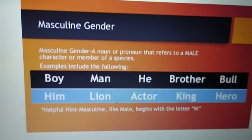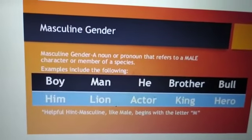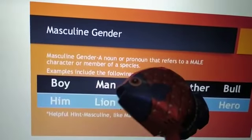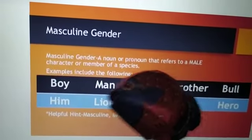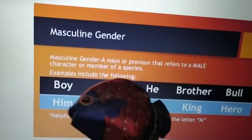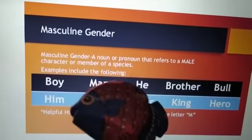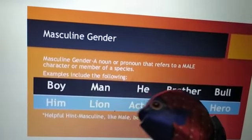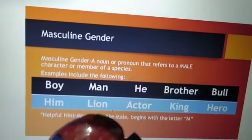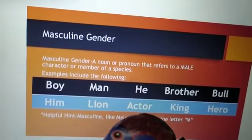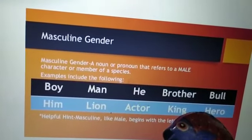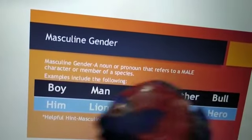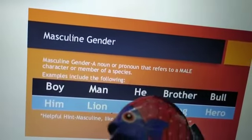Masculine gender: a noun or pronoun that refers to a male character or member of a species. Examples include: boy, man, he, brother, bull, him, lion, actor, king, hero. These are all examples of masculine gender.